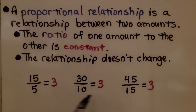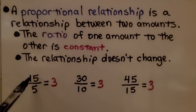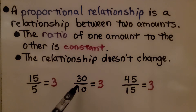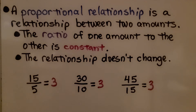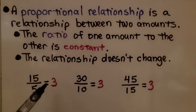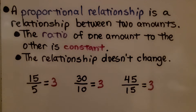We can see there's a proportional relationship between each pair of values. They're all 3 — it's a constant.